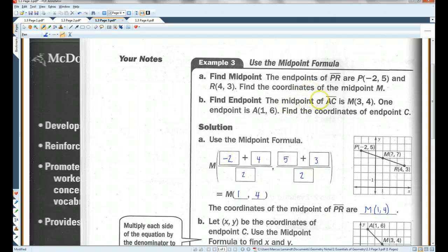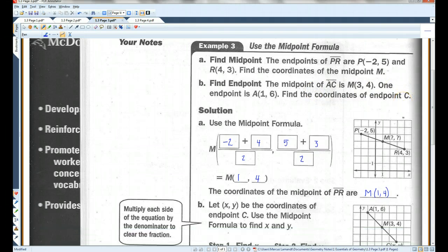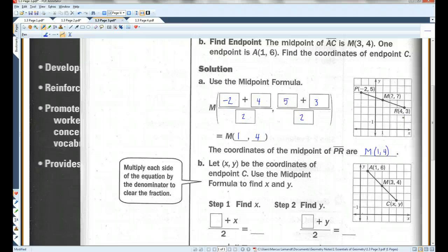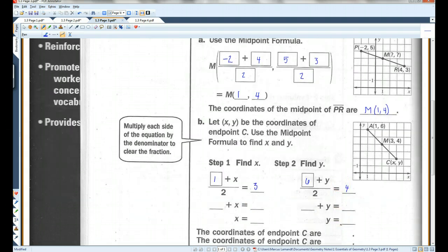Now the second one says the midpoint of AC is 3, 4. It's not given on the diagram. One endpoint is 1, 6. Find the coordinates of endpoint C. So in this case, we kind of have to work backwards. We're given the midpoint. We already know what the midpoint is. The midpoint is 3, 4. So the X is going to be 3 and the Y is going to be 4. One endpoint is 1, 6. We need to find an X value and a Y value that will give us 3 and 4. Let's solve for them one at a time.